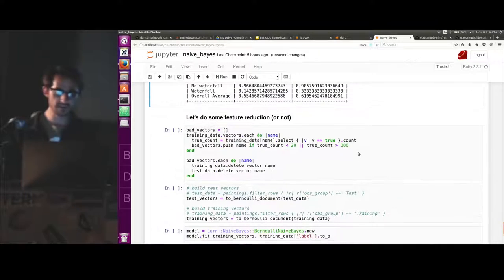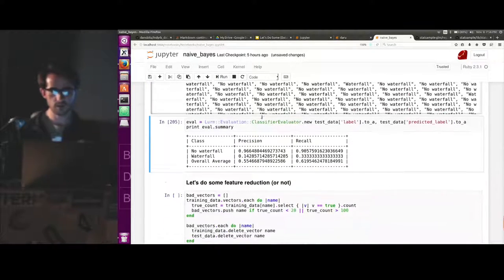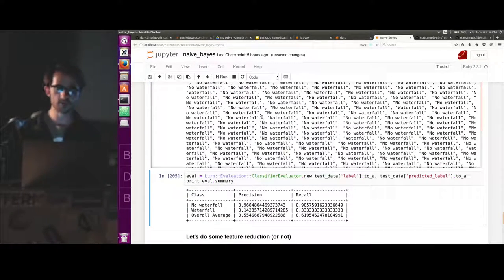I tried to go through and do an example of feature reduction. So what's really happening here is there are a lot of variables. There are 75 variables in here that we're trying to use to predict waterfall. And the reality is that a lot of them have nothing to do with the painting containing a waterfall, but it's adding the noise to our model.